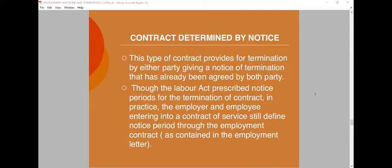This type of contract provides for termination by either party giving a notice of termination that has already been agreed by both parties. The notice of termination is already agreed by both parties, and the agreement tool is the employment letter. You have to go back to the employment letter to look at the terms and conditions of employment before you terminate any employee.